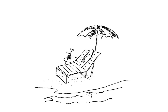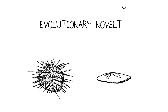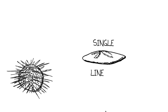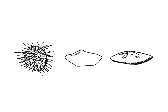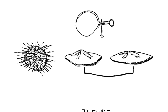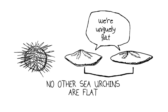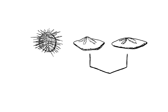So if sand dollars are sea urchins, can we identify some evolutionary novelty that joins all the sand dollars together to the exclusion of all other types of sea urchins? Can we put them together in a single lineage? Here's our sea urchin, and here is our sand dollar. Here's another type of sand dollar. The obvious feature that links these two is that they are, as we said, really flat. But no other sea urchins are flat like this. That's a character that uniquely connects all of the sand dollars together to the exclusion of all other sea urchins.